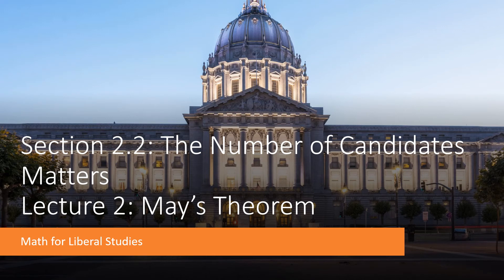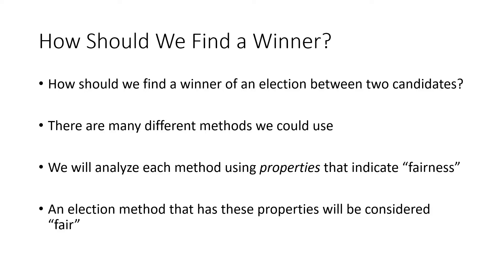This is the second video for section 2.2 on the number of candidates matters. In this lecture we'll be talking about something called May's theorem. The general topic is to figure out how we find the winner of an election between two candidates. There are many different methods we can use, and we're going to look at some different examples of those methods and analyze each method using properties that indicate fairness. An election method that has these properties is going to be considered fair.